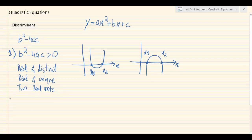Moving on, number two. What if the discriminant comes out to be equal to zero? b squared minus 4ac is equal to zero.